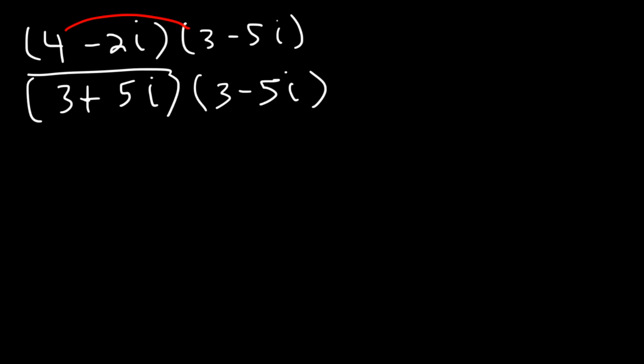4 times 3, that's going to be positive 12. And then 4 times negative 5i, that's negative 20i. And then negative 2i times 3, that's negative 6i. And then we have negative 2i times negative 5i. That's going to be positive 10i squared.